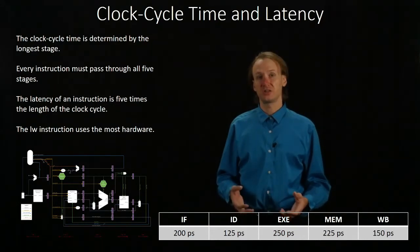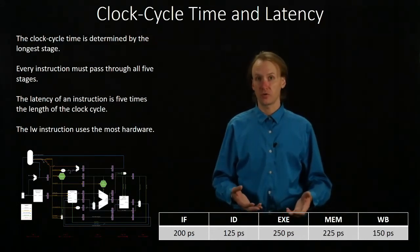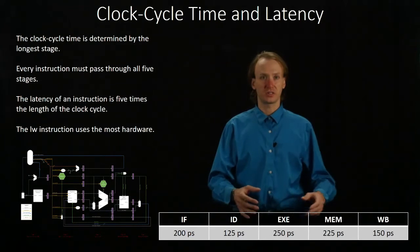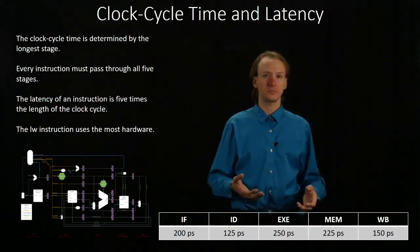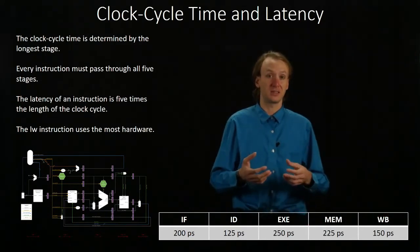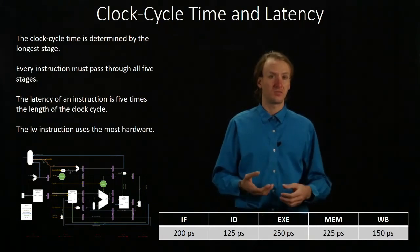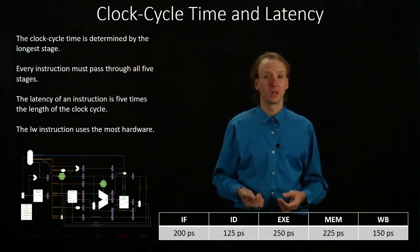The most expensive stage is the one that's slowing the processor down overall because all of these other stages have some amount of slack in them. There's some amount of space at the end of the clock cycle that really isn't being taken advantage of.